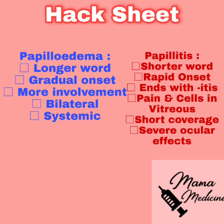Papillitis is a shorter word that ends with '-itis,' so you can associate it with inflammation and inflammatory signs — like pain with extraocular movements and inflammatory cells in the vitreous. Because it is a shorter word, there is shorter coverage: no bilateral involvement, no systemic involvement, but severe ocular effects limited to the eye.